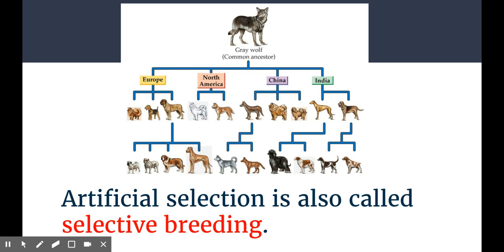We left off last time talking about how when we see changes in a population over time, or evolution, there's more than one kind of thing we can point to to explain that change. The first thing we looked at is sexual selection — the idea that choosiness for certain traits on the parts of a male or female can cause that trait to become more common over time. We then looked at artificial selection, where humans can choose for traits and therefore make that trait more common over time — so again, this would be evolution.